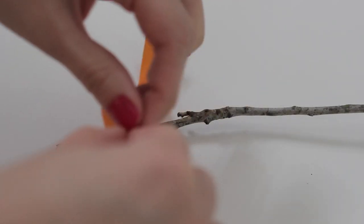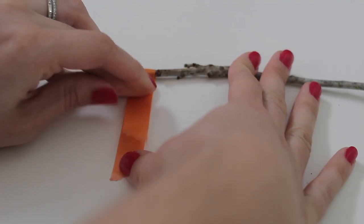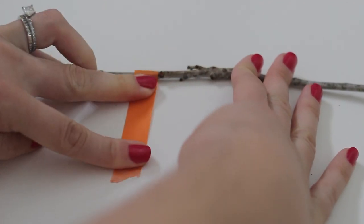Tear off a piece of tape that's about 6 inches long. Wrap it around the top part of the branch and press both sides together to create a flag.